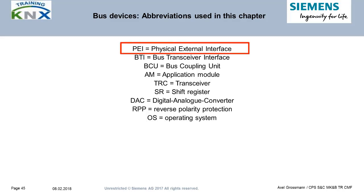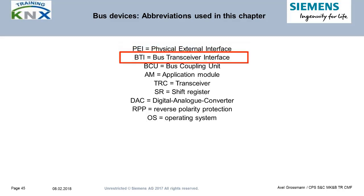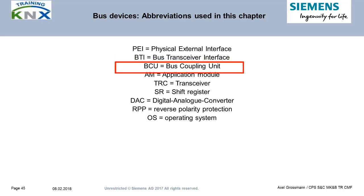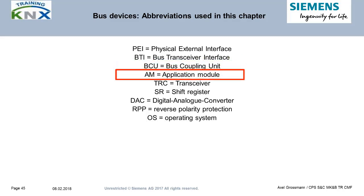PEI: the standardized connection interface between classical bus couplers and application modules. BTI: same as PEI, but only for Siemens devices. BCU: bus coupling unit, self-explanatory. AM: application module, the part of the bus device which makes up its function.